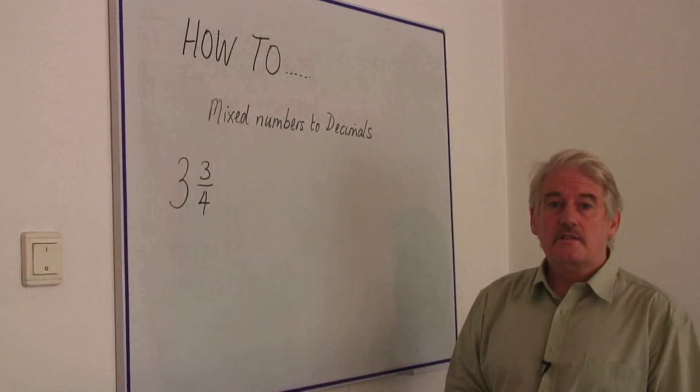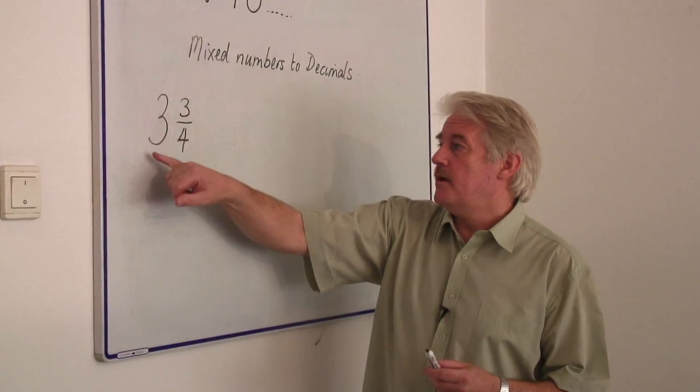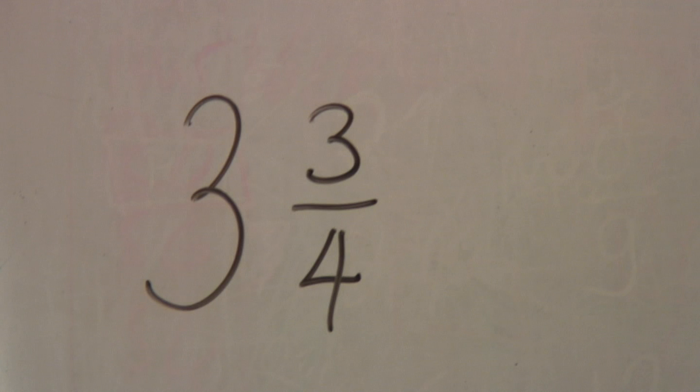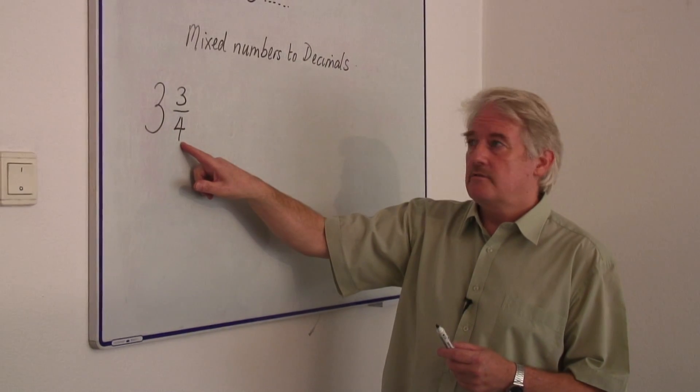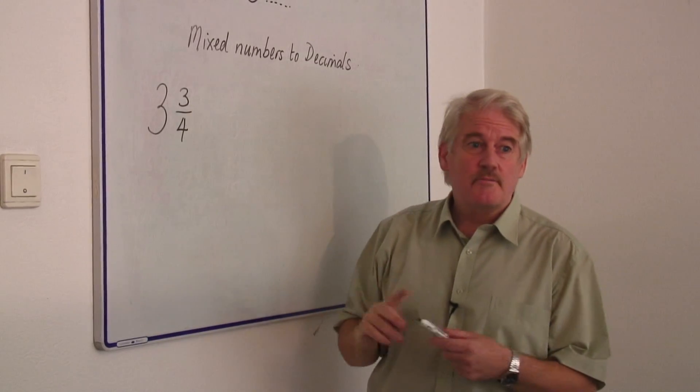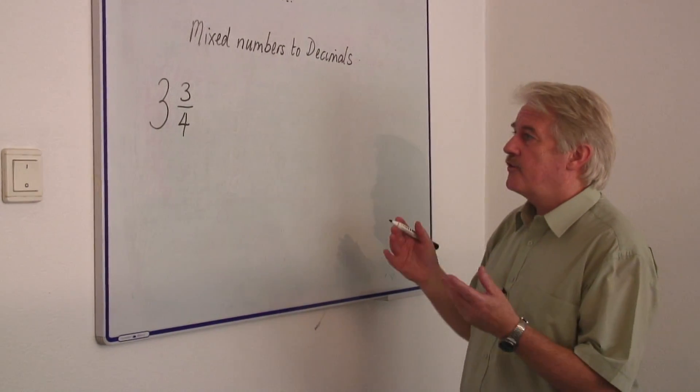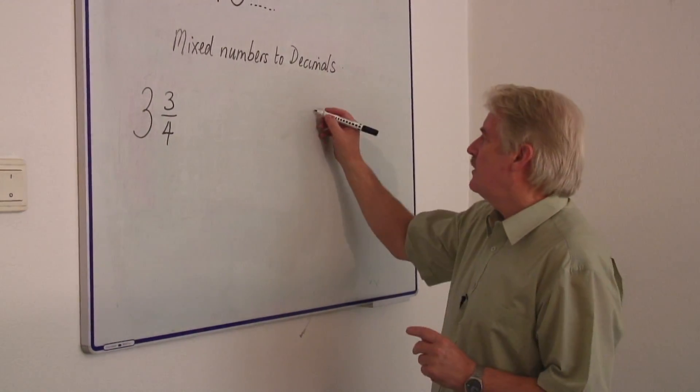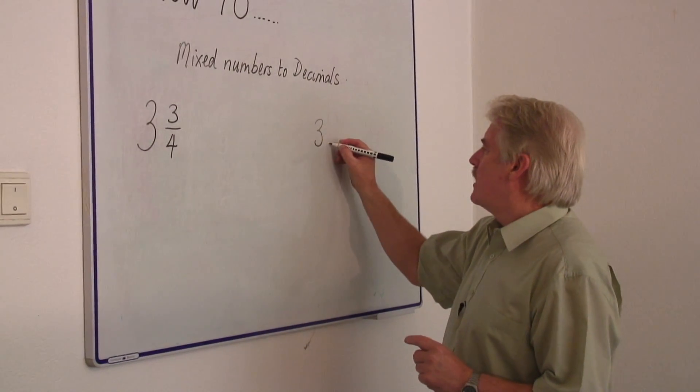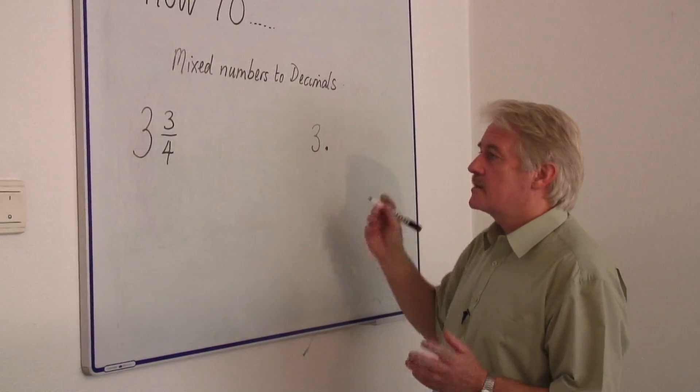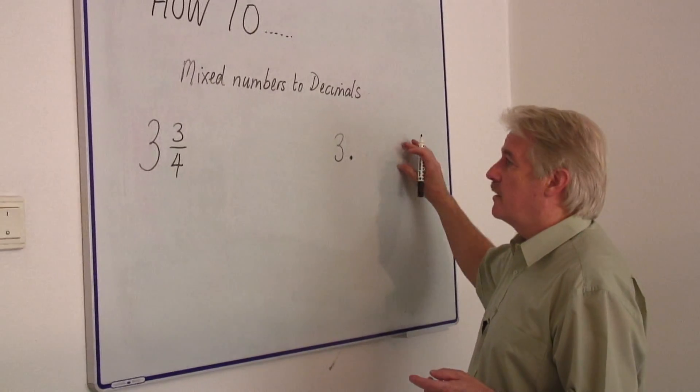What is a mixed number? First of all, a mixed number is a number which contains whole numbers and fractions. The whole number is easy because it remains as it is. So we know that the first part of the number is going to be three and then it's going to be point something. That's the decimal part.